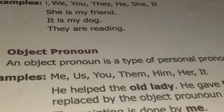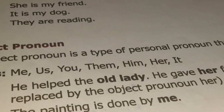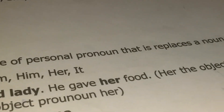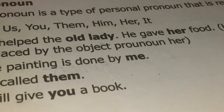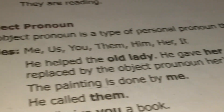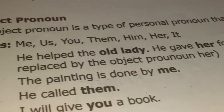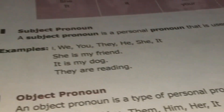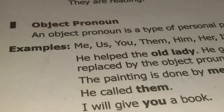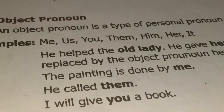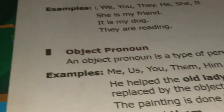Let's see the examples. 'He helped the old lady. He gave her food.' Here the object 'old lady' is replaced by the object pronoun 'her'. 'The painting is done by me' — 'me' is a personal pronoun and an example of an object pronoun. 'He called them' — 'them' is also an object pronoun. 'I will give you a book' — 'you' is an object pronoun.